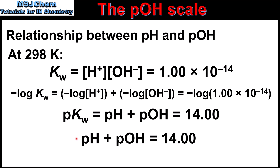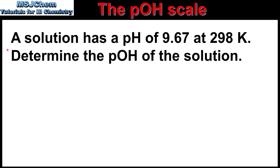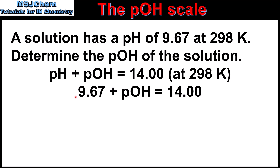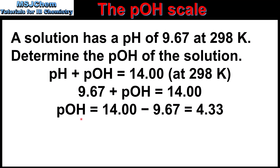Next we look at some calculations. Our first example: a solution has a pH of 9.67 at 298 K, and we'll determine the POH of the solution. We use the relationship pH plus POH equals 14. So 9.67 plus POH equals 14. Therefore, POH equals 14 minus 9.67, which gives us 4.33. So the POH of the solution is 4.33.